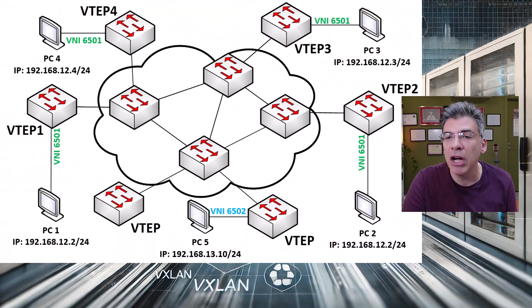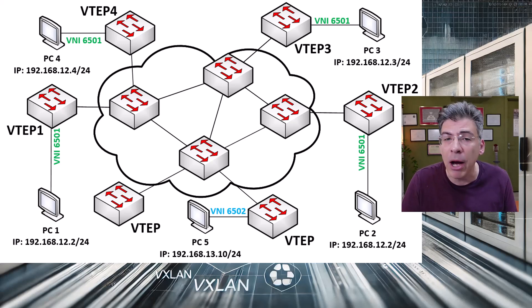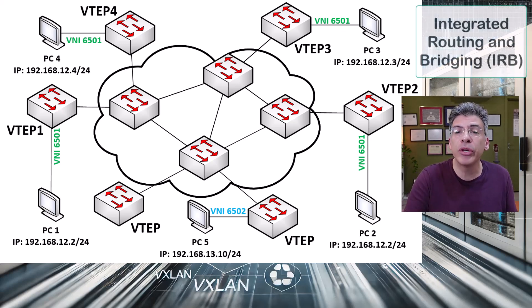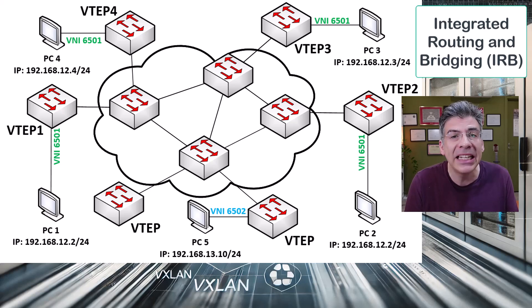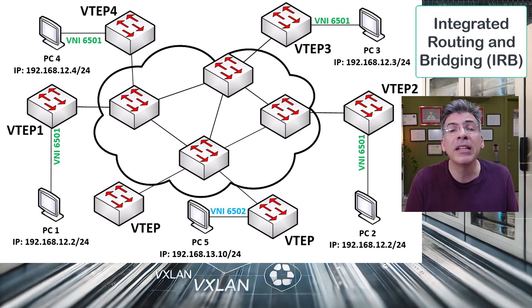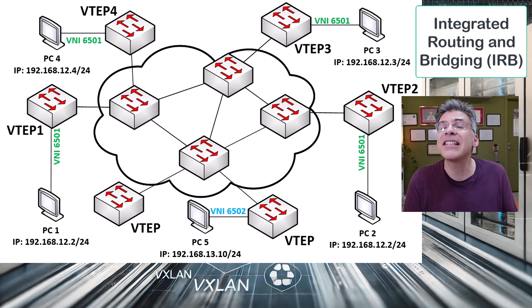So far we've gone through several videos talking about both Layer 2 and Layer 3 operations in VXLAN. Integrated routing and bridging, or IRB, in the context of VXLAN, simply refers to the capability of the VTEP devices to perform Layer 2 switching, or bridging, as well as Layer 3 routing.